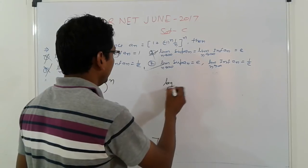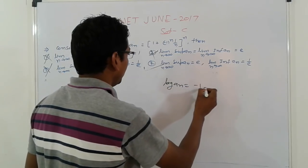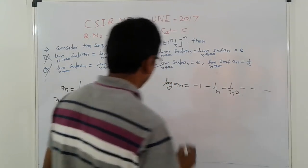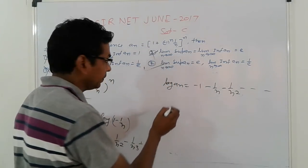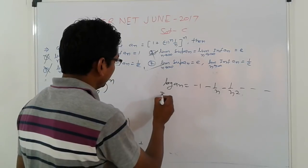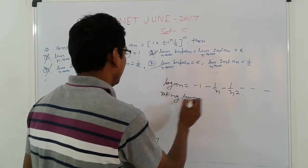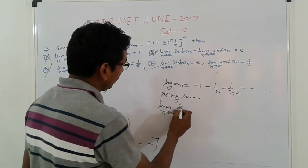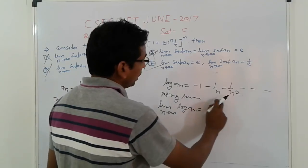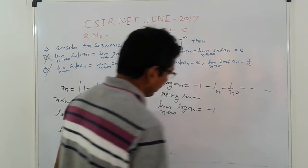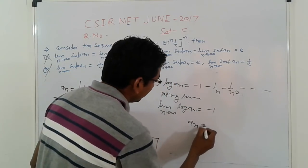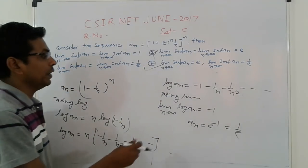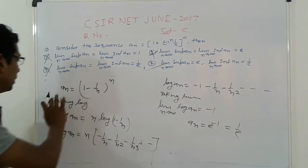So log of An is equal to minus 1, minus 1 upon n, minus 1 upon n square, and so on. Taking limits: limit n tending to infinity log of An is equal to, here apply, we get this only minus 1. So An is equal to e raised to minus 1, that is 1 upon e. So which is the method to find out when the limits are in that format.